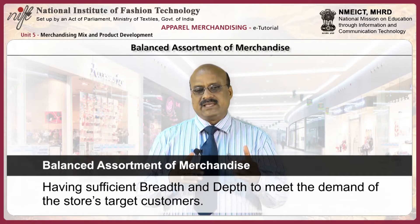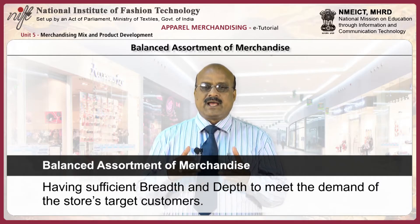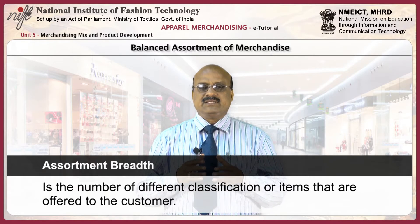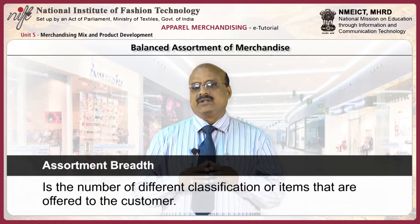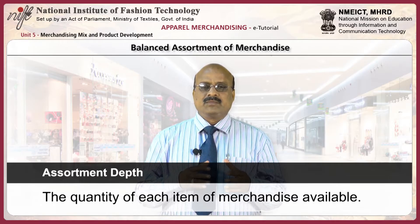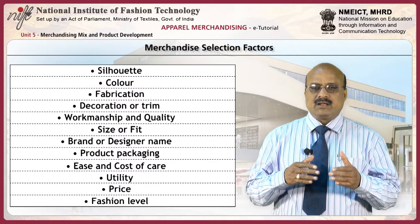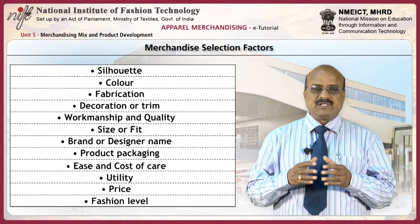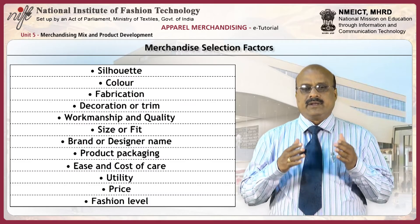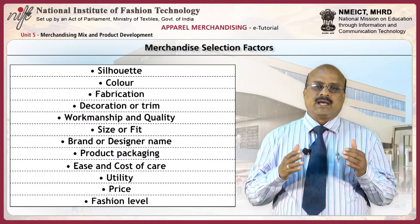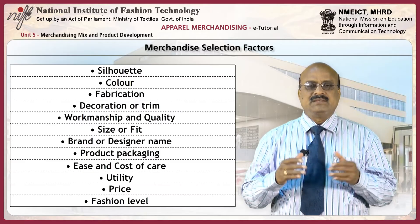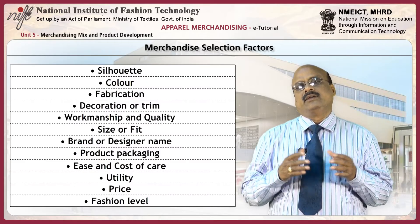Balanced assortment of merchandise is having sufficient breadth and depth to meet the demand of the store's target customers. Assortment breadth is the number of different classifications or items offered to the customer. Assortment depth is the quantity of each item of merchandise available. Factors for selecting merchandise include silhouette, colour, fabrication, decoration or trim, workmanship, quality, size or fit, brand or designer name, product packaging, ease and cost of care, utility, price, and fashion level.